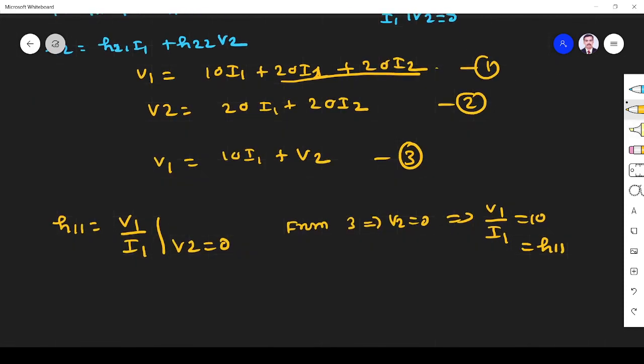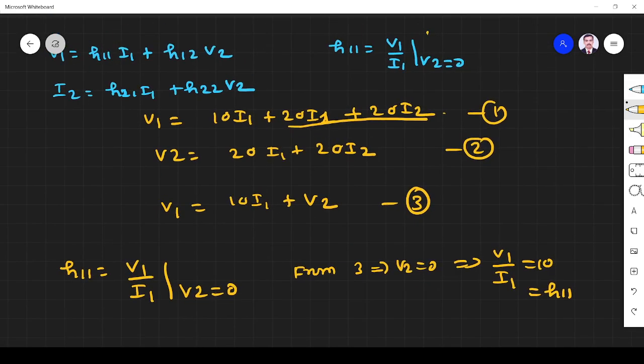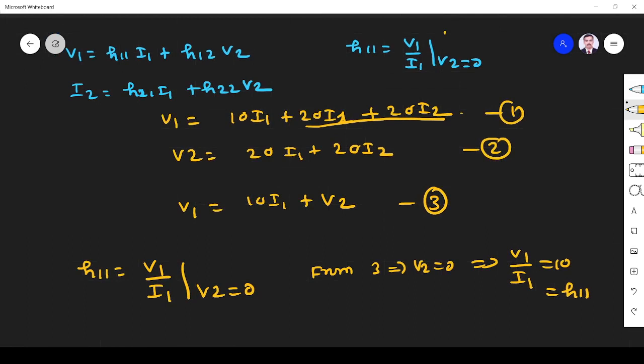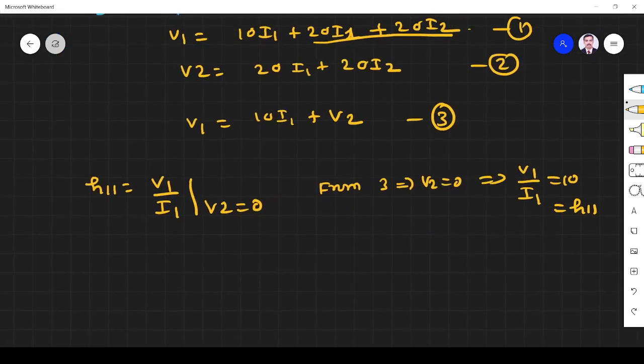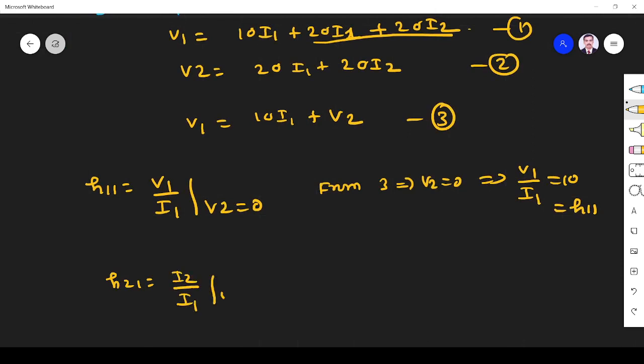Next, what other things can we find by using v2 equals zero? When v2 is zero I can find h21. h21 is equal to i2 by i1, provided v2 is equal to zero.